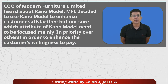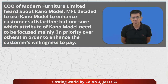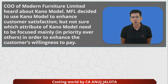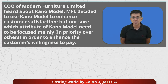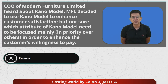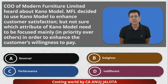Our MCQ for today: the CEO and COO of Modern Furniture Limited — let's call it MFL — heard about the Kano model. MFL decided to use the Kano model to enhance consumer satisfaction, but they're not sure which attribute of the Kano model needs to be focused on in priority over others in order to enhance the customer's willingness to pay. Options are: A — Reversal, B — Delighter, C — Performance, D — Indifferent.